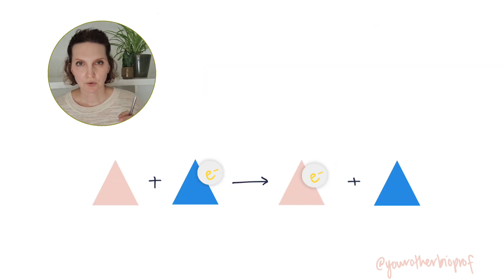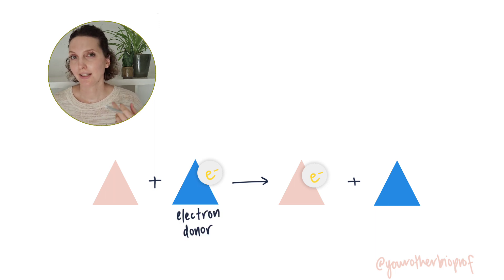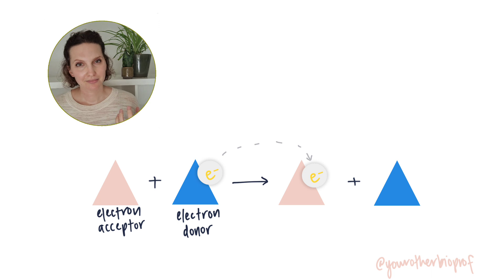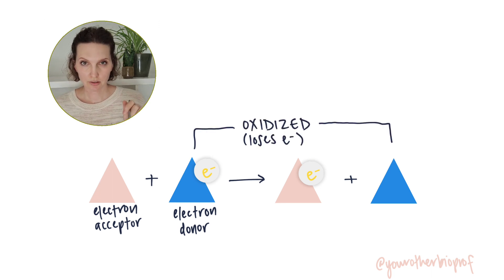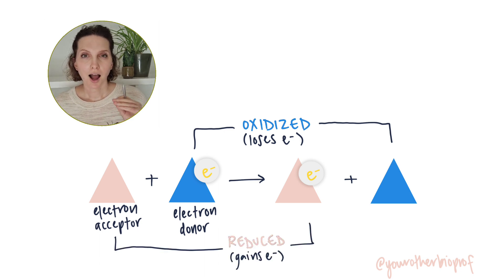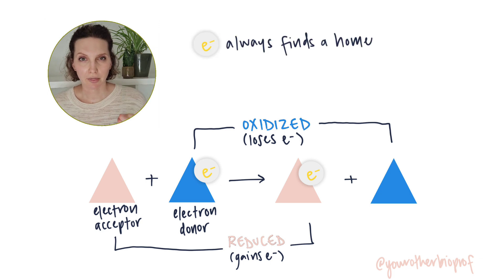In a redox reaction, electrons are transferred. One molecule or ion or atom is the electron donor. It's going to give up electron or electrons. And the other is the electron acceptor. It's going to take them. The electron donor is oxidized, and the electron acceptor is reduced. Oxidation and reduction occur together. If somebody's giving away electrons, somebody else is going to pick them up.